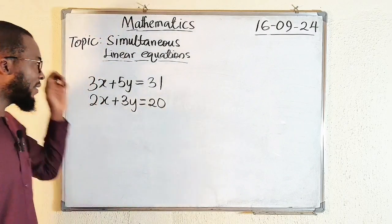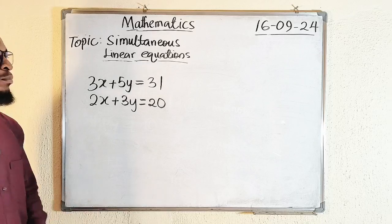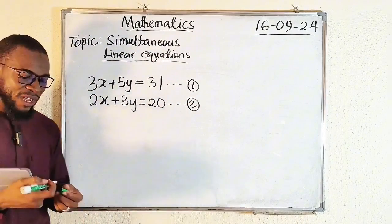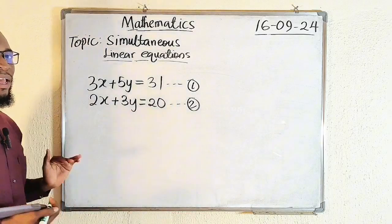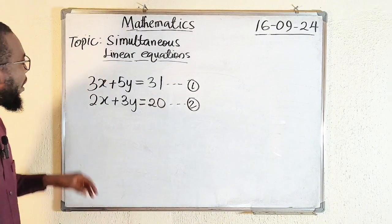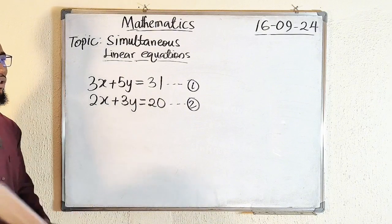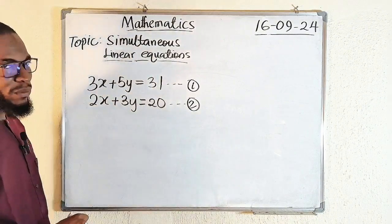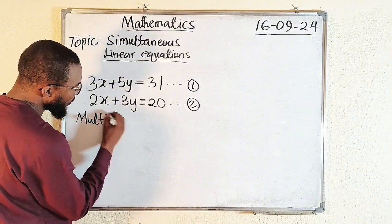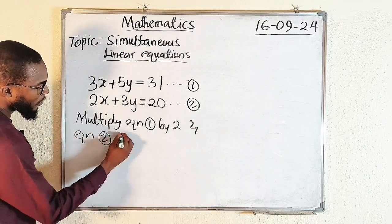To solve by the elimination method, you have to make sure that either x or y has the same coefficients. If you want to eliminate x, make sure the coefficients of x are the same in both equation one and equation two, and likewise for y. The first step is to name the equations — this is equation one and this is equation two. Next, decide whether to eliminate x or y. The coefficients of x here are three and two, which are different, so we find the LCM of three and two, which is six.